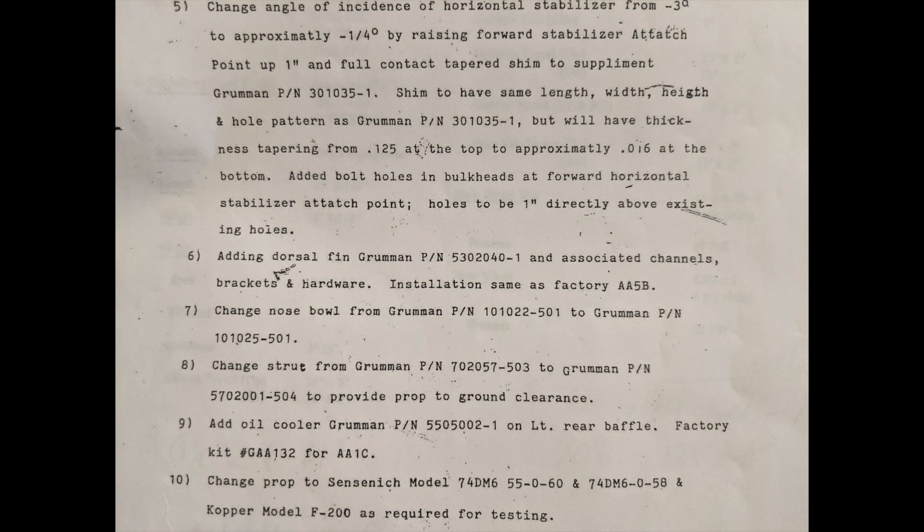They describe the shims and how they are shaped, and also adding a nose strut. Importantly, they talk about moving the horizontal stabilizer attach point upward exactly one inch. There's a two-legged anchor that it screws into, which is a half inch from center to the holding anchor. When you drill one out and flip it around, you move it up exactly one inch, which brings it close to zero incidence on the tail.